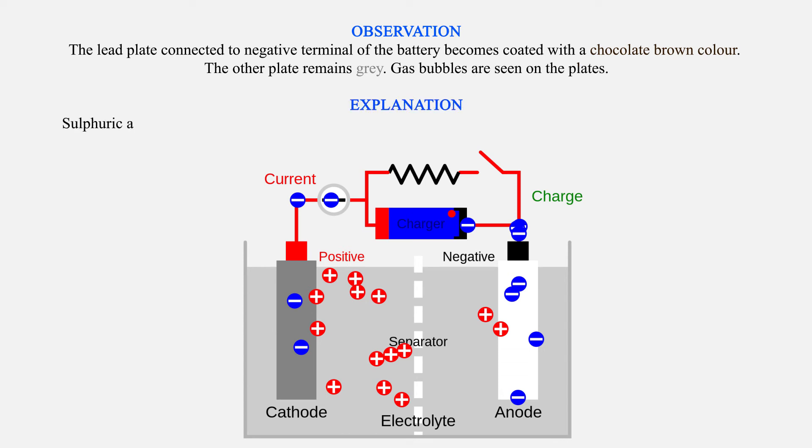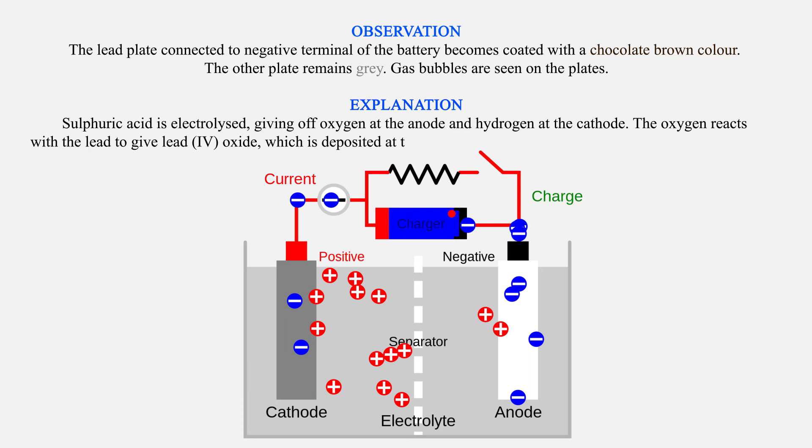Explanation. Sulfuric acid is electrolyzed, giving off oxygen at the anode and hydrogen at the cathode. The oxygen reacts with the lead to give lead oxide, which is deposited at the anode. Hydrogen gas formed at the cathode has no effect.